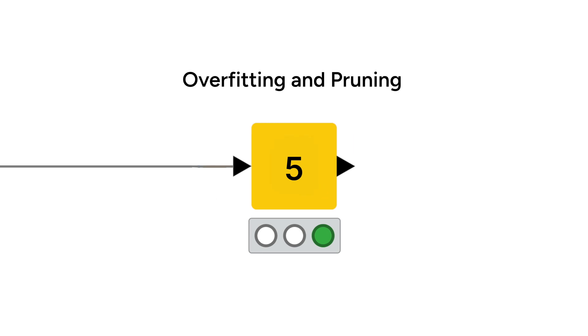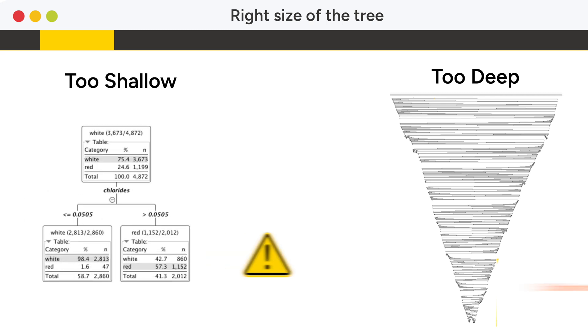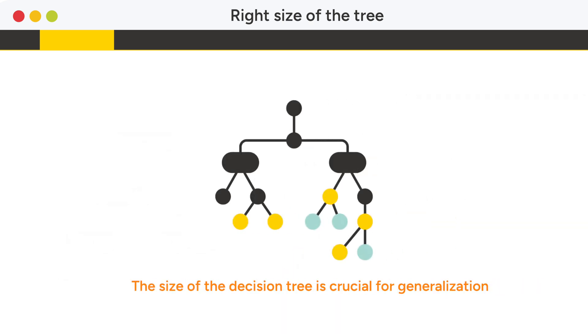Decision trees, like many machine learning algorithms, are prone to overfitting if they are too deep. Trees that are too detailed do not generalize well to new data, while shallow trees might not fit the data well. The size of the decision tree is crucial for generalization.